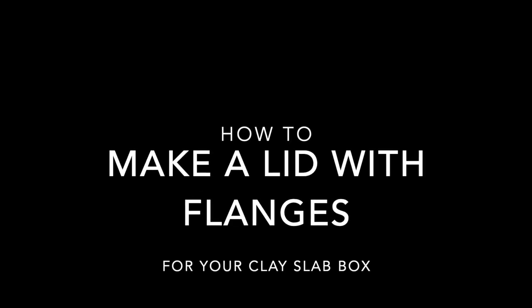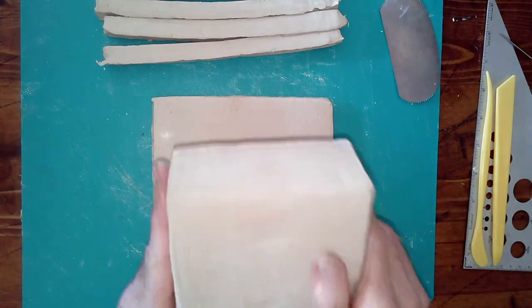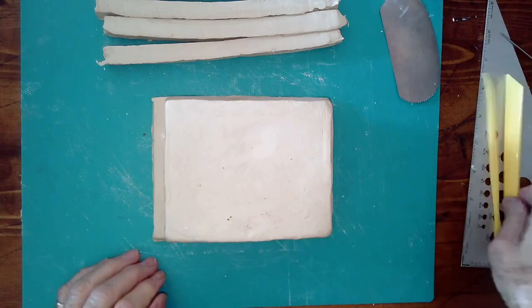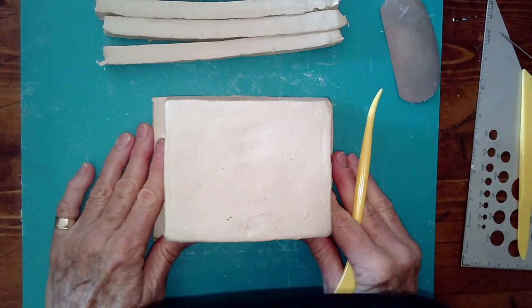How to make a lid with flanges for your clay slab box. First thing you want to do is measure the parameters of your box on the slab that you already cut for your lid.